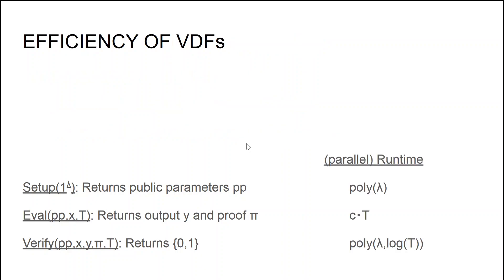As for the efficiency of a VDF, we require that the algorithms satisfy the following bounds in terms of runtime. The setup algorithm should run in time polynomial in the security parameter, which means it is independent of t. The evaluation algorithm should run in time c times t for a certain constant c. Finally, the verification algorithm should run in time polynomial in lambda and logarithmic in t, making it much faster than the evaluation algorithm. In this work, we say that a VDF is tight if the time to run the evaluation algorithm is very close to t, and in particular if the constant c is approximately equal to 1.